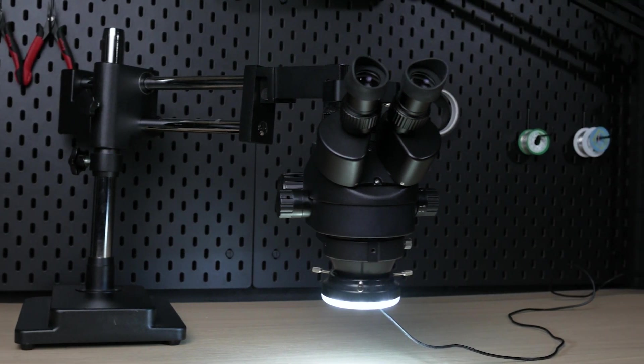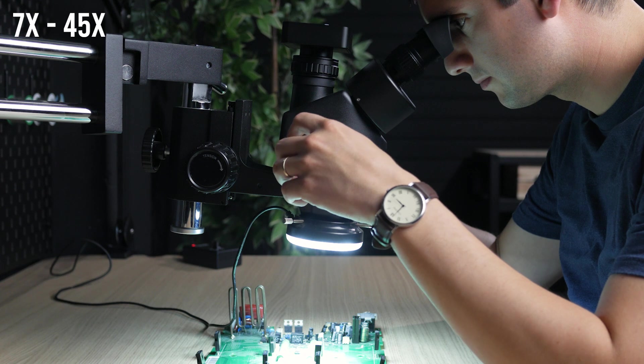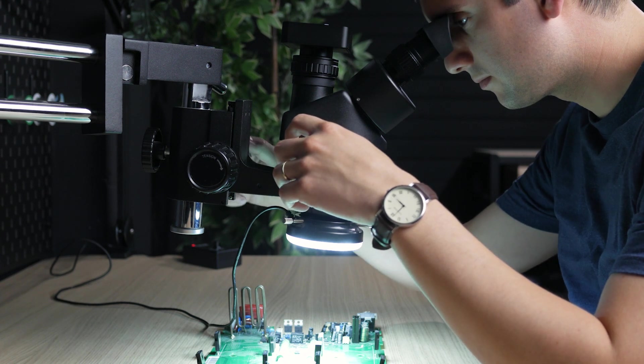Stereo microscopes often have a magnification of around 7 up to 45. This is less than a digital microscope but actually more than enough for both practical work and inspection.